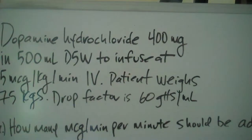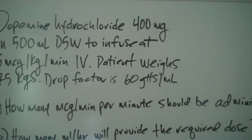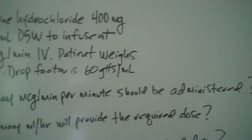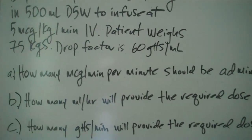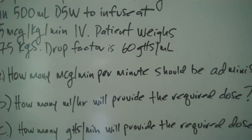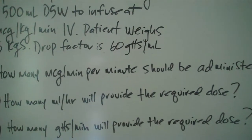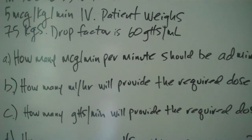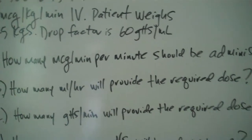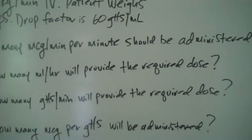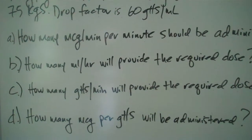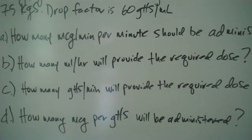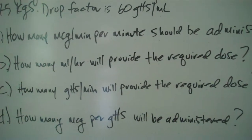This is in four parts. A: How many micrograms per minute should be administered? B: How many milliliters per hour will provide the required dose? C: How many drops per minute will provide the required dose? And lastly, D: How many micrograms per drop will be administered?